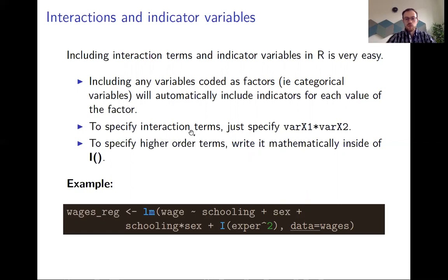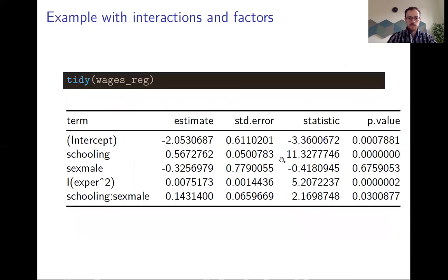If you specify interaction terms, you can just multiply them inside the formula. Here we have a different example that includes these interaction terms, and here you can see we have experience squared included here.